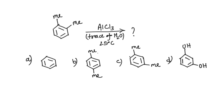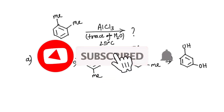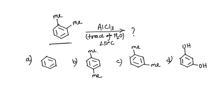We have this question. You are given a compound and it is treated with aluminium chloride — AlCl₃ is there — in the presence of a trace amount of water, and the reaction condition is 25 degrees centigrade. You have to predict what the product will be. Four options are given.